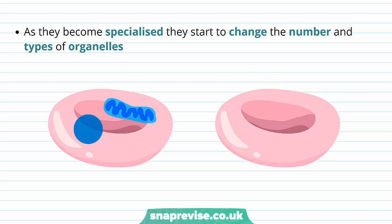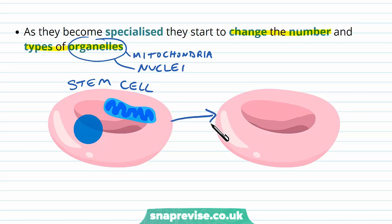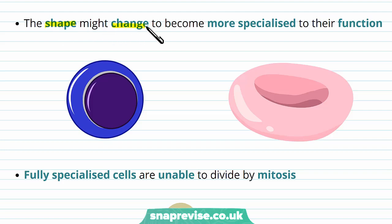As cells become specialized, they start adopting particular features. They start to change the number and types of organelles found within them. An organelle is a structure found within a cell that carries out a specific function, like a mitochondria or nucleus. With erythrocytes, for example, we initially have a stem cell starting to become a red blood cell. As it specializes into an erythrocyte, we start losing the nucleus and we lose mitochondria. The reason for this is that it makes more room for oxygen to enter the cell. We may also see shape changes as stem cells become specialized, because this is more suited towards their function.